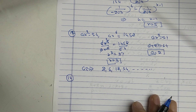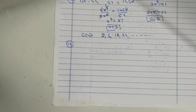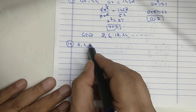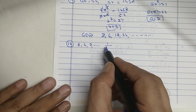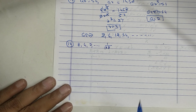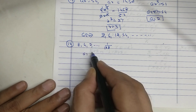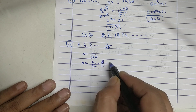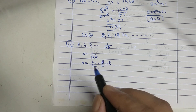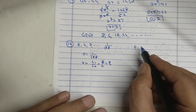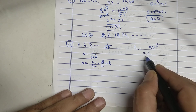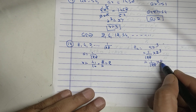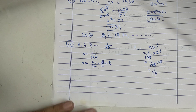Sum number 14. Given GP: 8, 4, 2. Finding from the end, A will be 1 upon 128. R equals T1 upon T2 equals 8 upon 4, which is 2. From the end, finding the 4th term: AR cubed equals 1 upon 128 into 2 cubed, which is 1 upon 128 into 8, equal to 1 upon 16. Video ends.